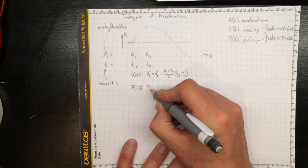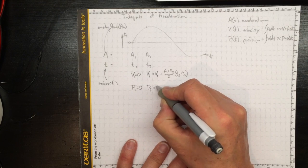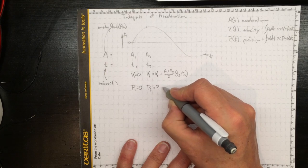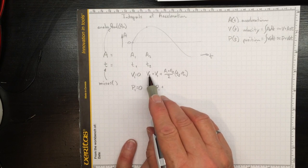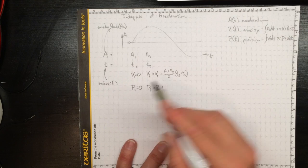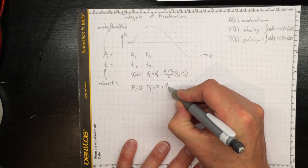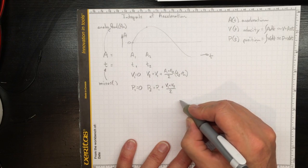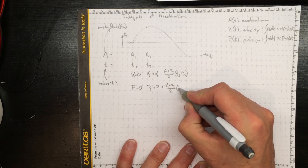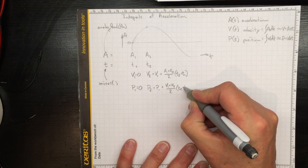And we can get an estimate of the position at 2 as just the position at 1 plus the average velocity. So v1 plus v2 over 2 gives us an average of the velocity times t2 minus t1.